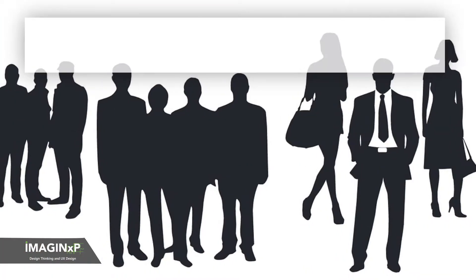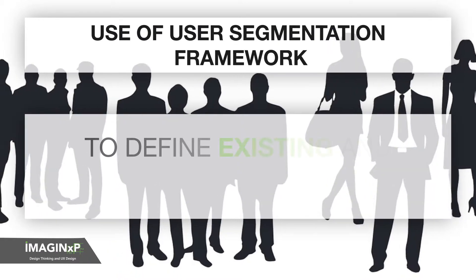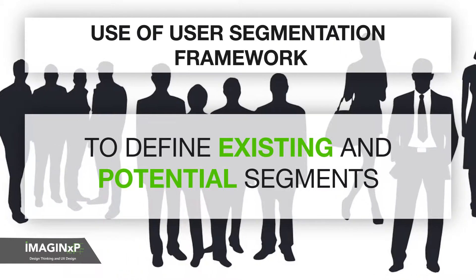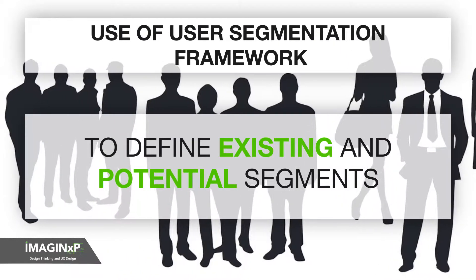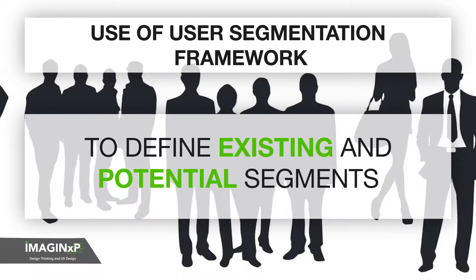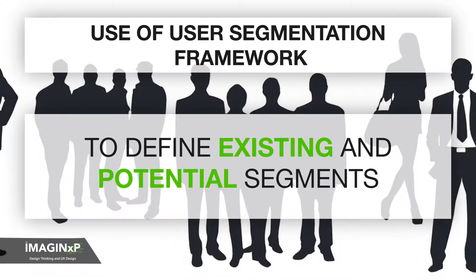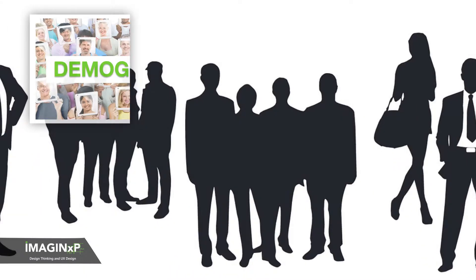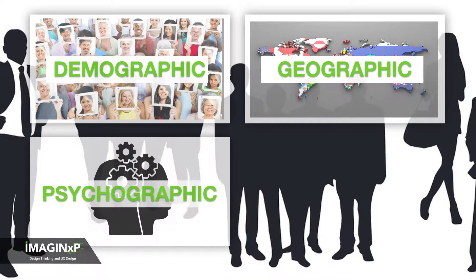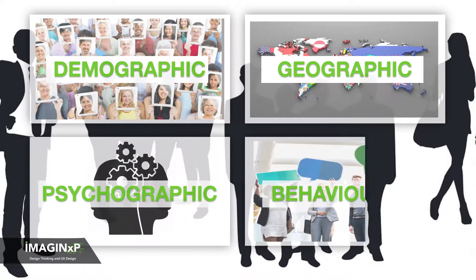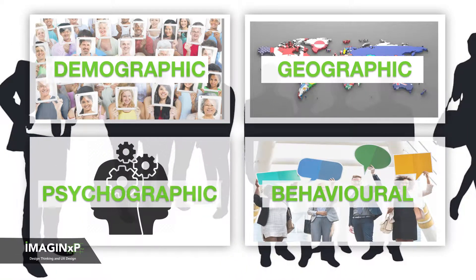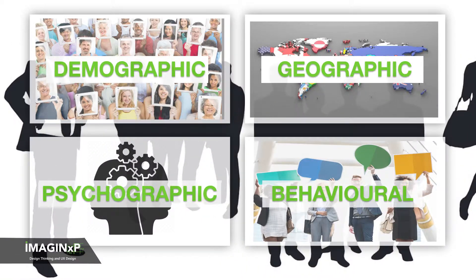The user segmentation framework is widely used to define existing and potential segments based on four main parameters: Demographics, Geographic, Psychographic, and Behavioral. Let's look at each one of these in detail.